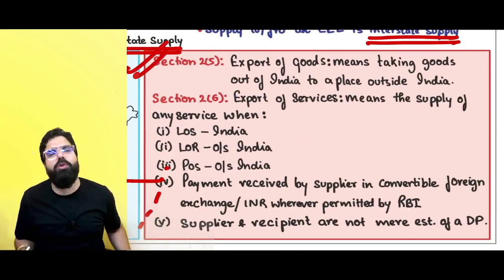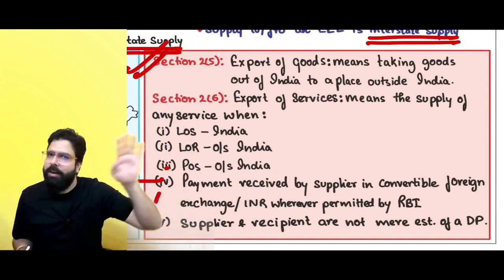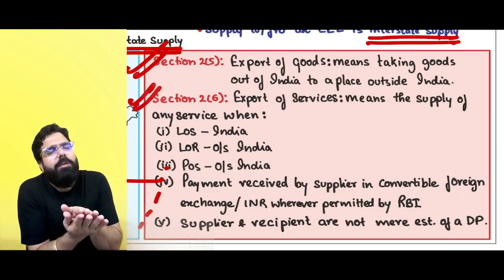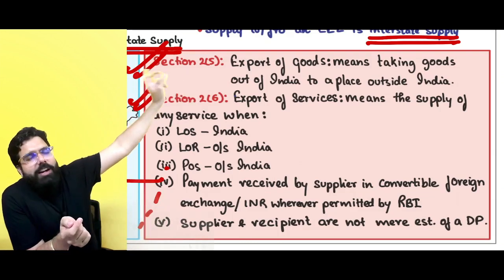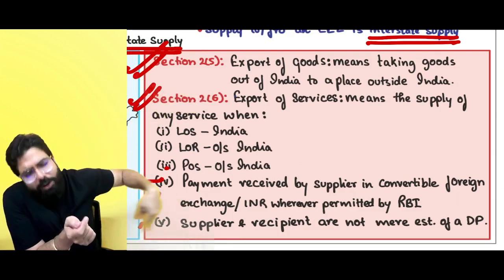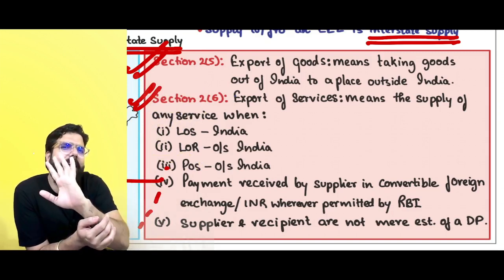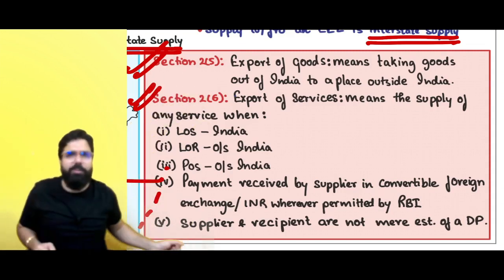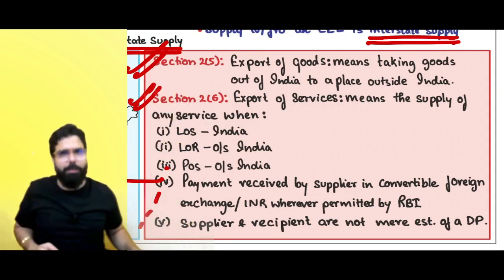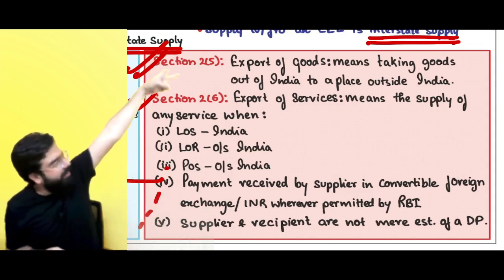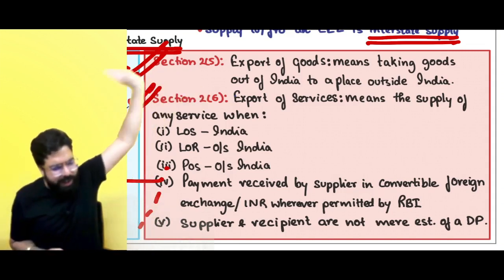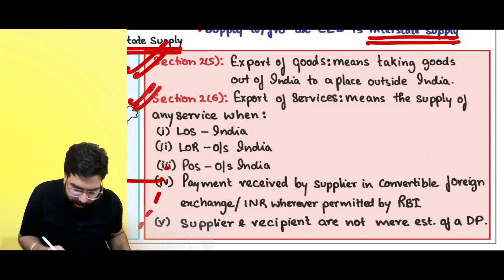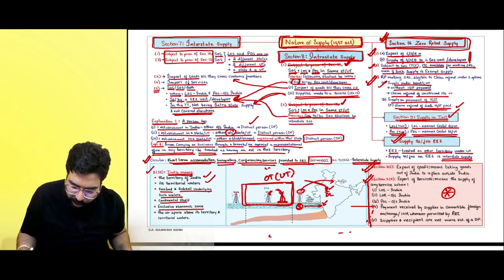Export of goods means taking goods from India to outside India. Export of service — a very important definition — requires five conditions: supplier is in India; recipient is outside India; place of supply is outside India; payment is received in foreign convertible currency (INR is acceptable for Nepal and Bhutan); and the two parties are not mere establishments of a distinct person, i.e., not head office and branch office. If all five conditions are met, it is export of service.